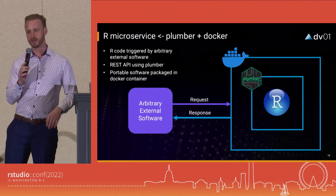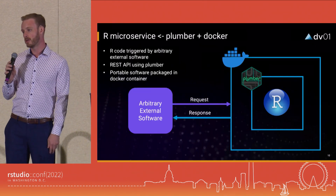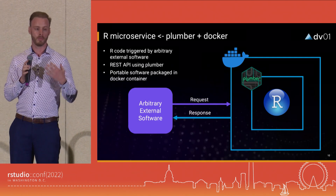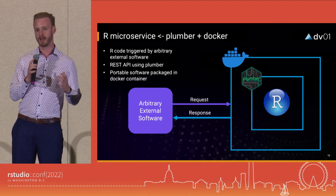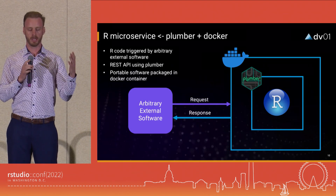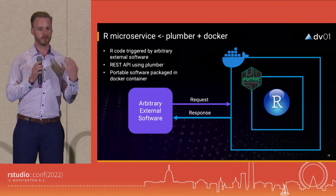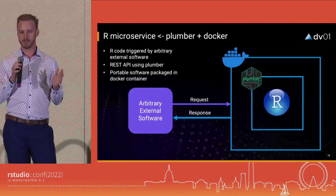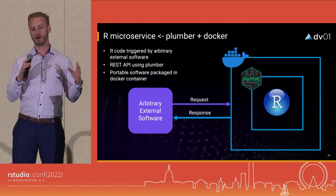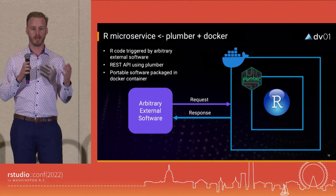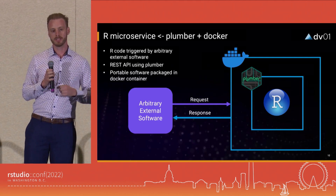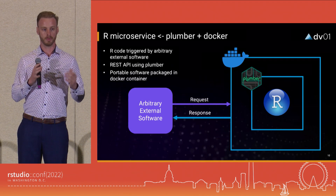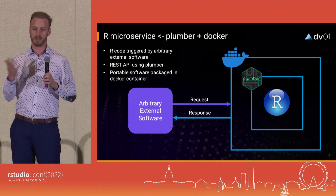What is an R microservice? It's basically R code behind Plumber and Docker. We take our R code, our machine learning model, and put it behind a Plumber API. This allows any other application to hit our machine learning model — it only has to provide the expected input and it gets an output. Any other service doesn't need to know anything about R. Then we wrap that Plumber API in a Docker package, which makes our API portable and allows us to deploy it into the cloud.